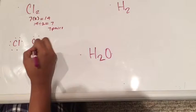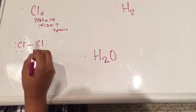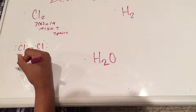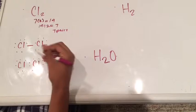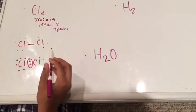So you write out the atoms and start drawing pairs. This is one pair, two pair, three pair, and there's a lone seventh dot over here. Then one pair, two pair, three pair, and that lone seventh dot. Then you draw a bond, which is the connecting point between these two elements, signifying that the two atoms will now share the electrons.